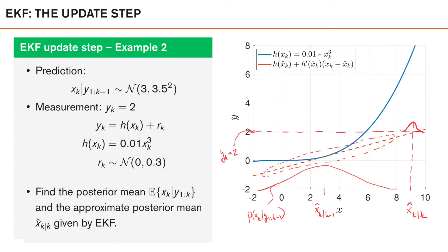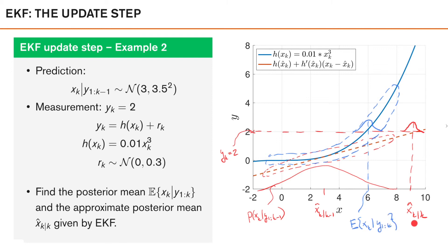To compare with the true posterior mean, we consider the true joint distribution rather than the Gaussian approximation from linearizing the measurement model. The true joint is illustrated the same way, following the blue non-linear curve h, with uncertainty added according to measurement noise covariance of 0.3. Looking at the slice where yk equals 2 gives the true posterior, whose mean is around 6. So there is a significant difference between the true posterior mean and the EKF approximation.